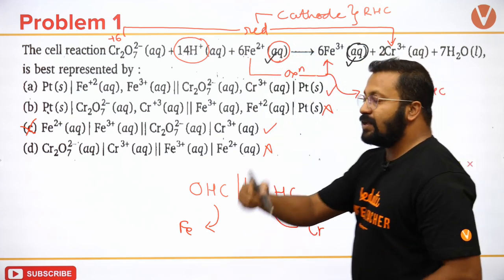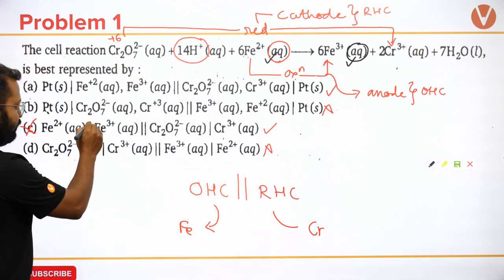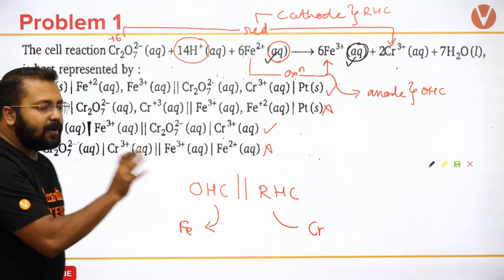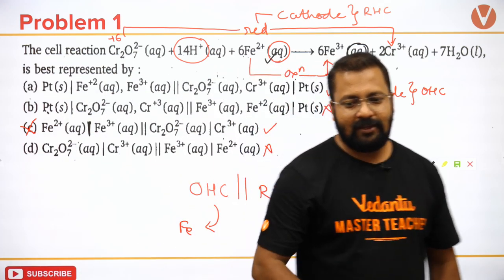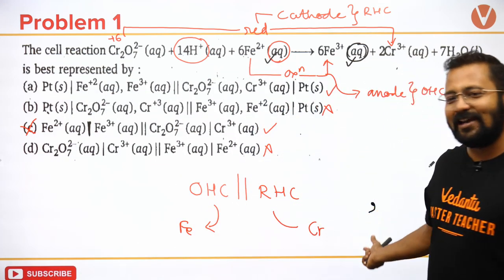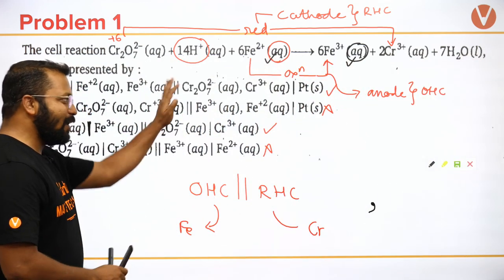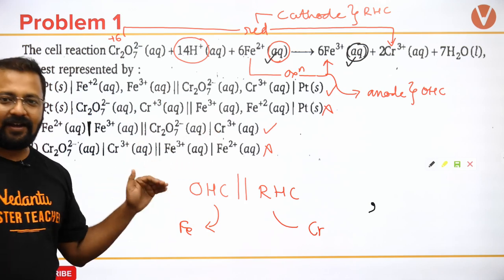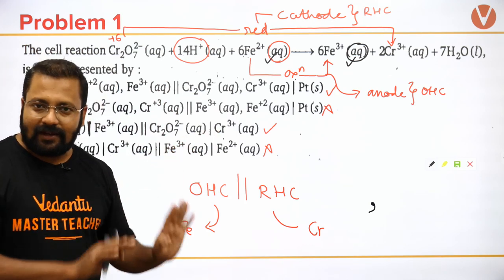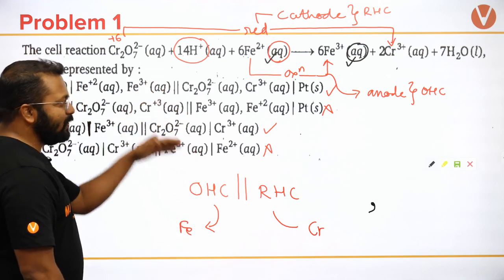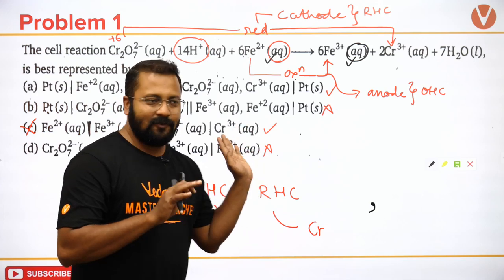This is a very small but very dangerous difference. If you get this question wrong you will make a negative mark. It's a simple question but you'll feel — why did I make such a mistake? When both species are in the same phase (aqueous and aqueous), I will put a comma, not a vertical line.